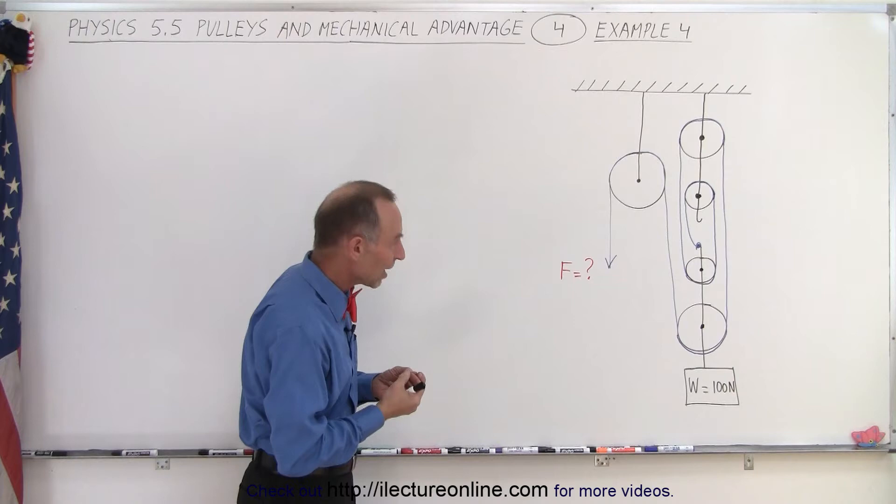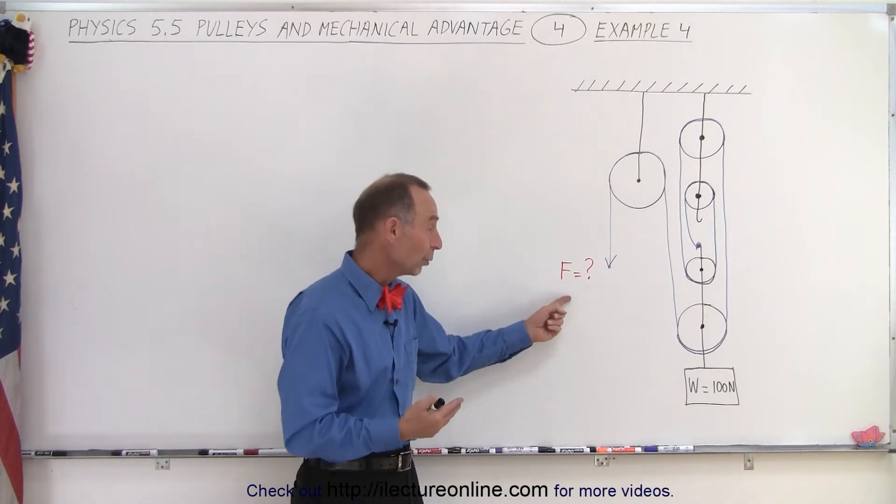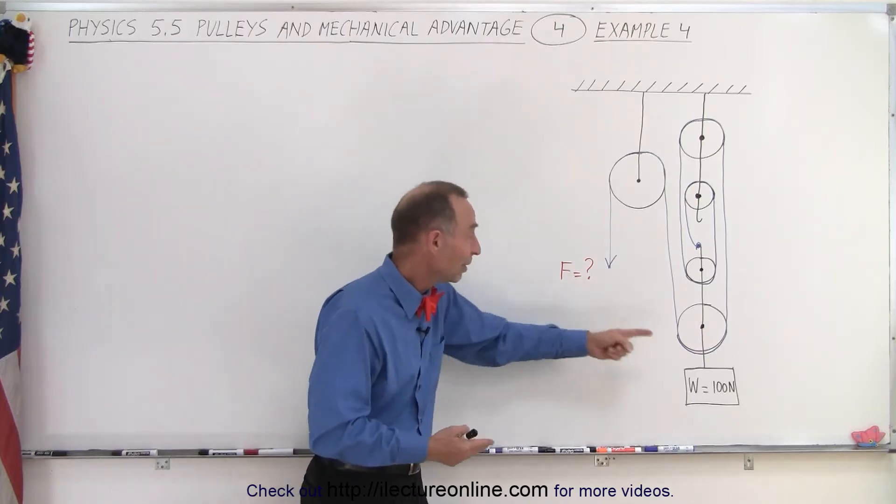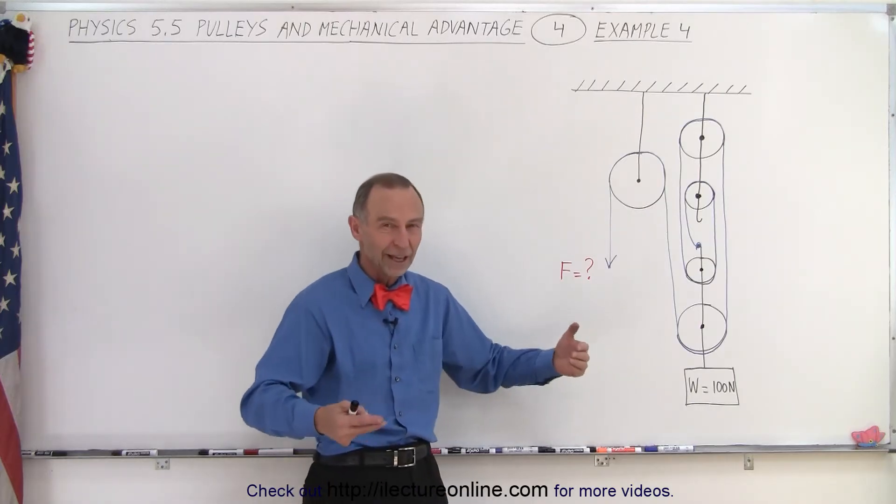Well the mechanical advantage is the ratio of how much weight you can lift versus how much force you have to pull with. So if you only need to pull with a force of 50 newtons and the weight of the object is 100 newtons, that gives you a two to one mechanical advantage.